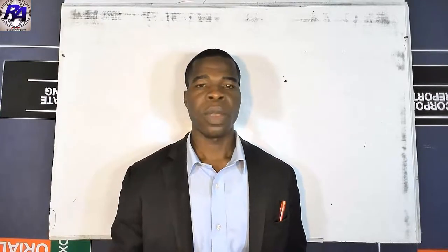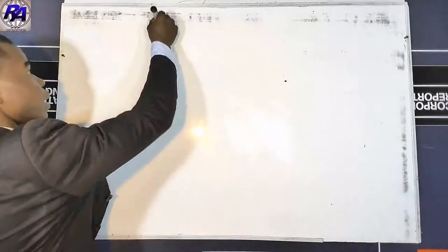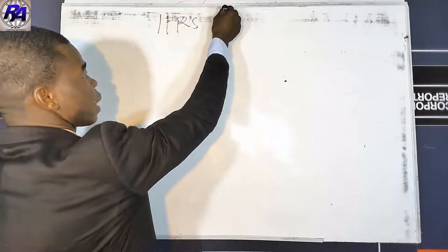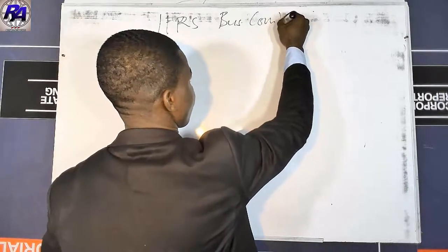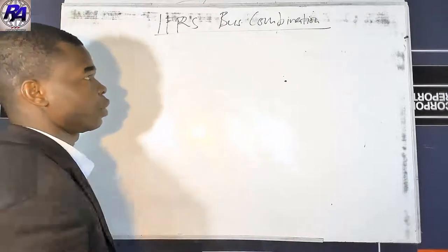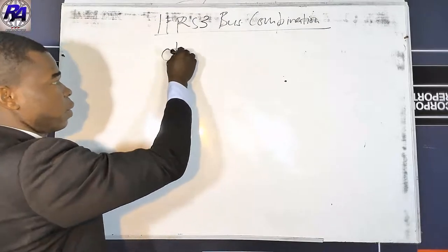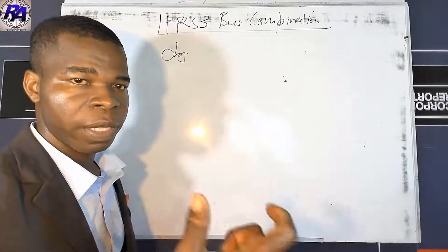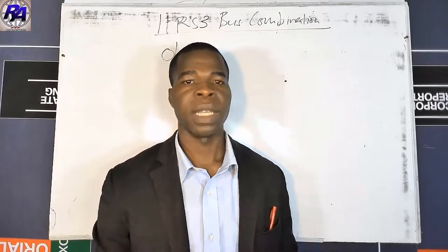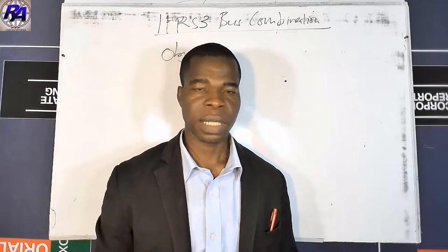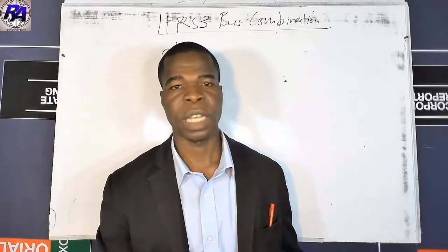IFRS 3 is basically about business combinations. The objective of IFRS 3 is to improve the relevance, reliability, and comparability of information presented in the financial statement about business combinations and their effects.